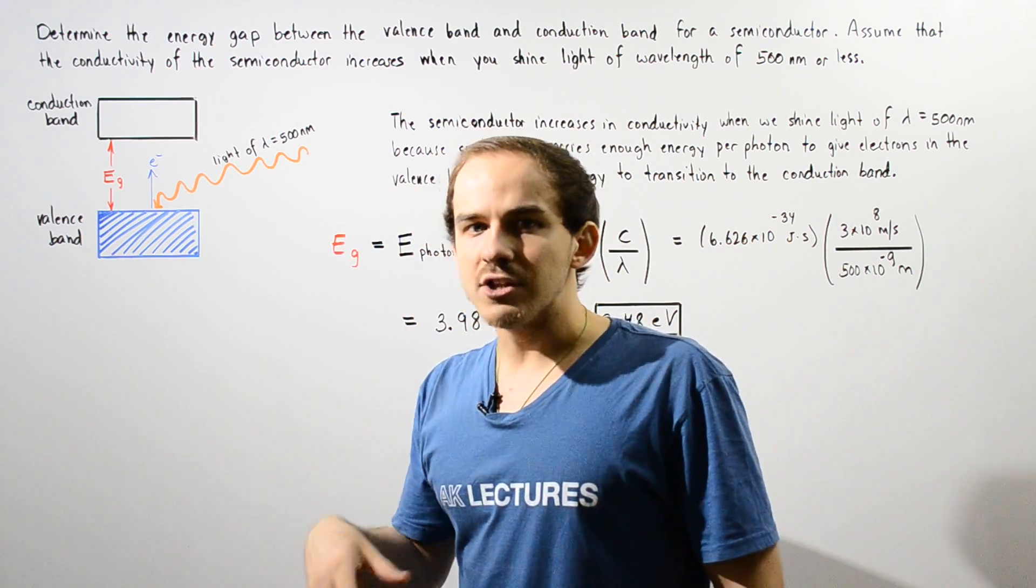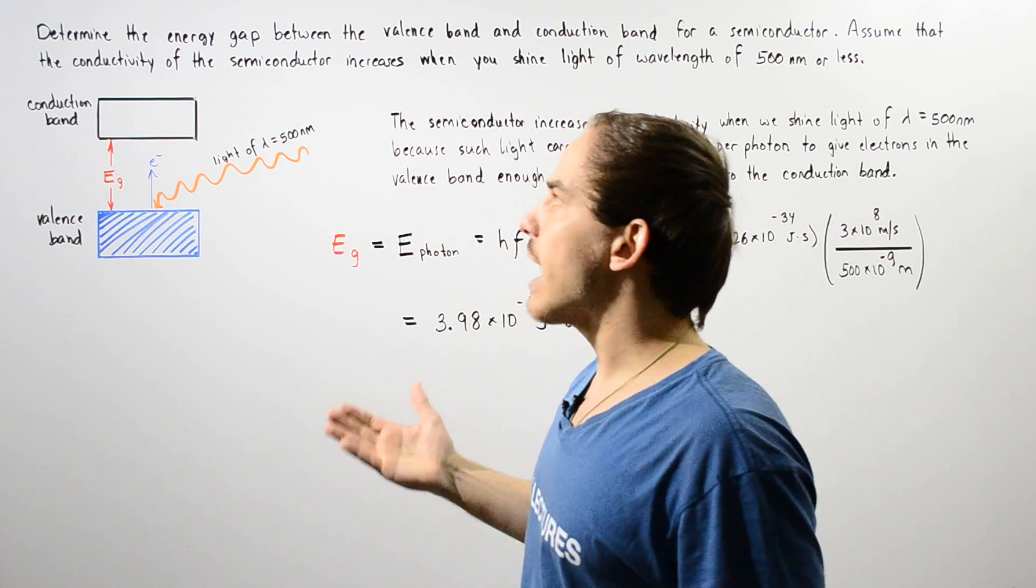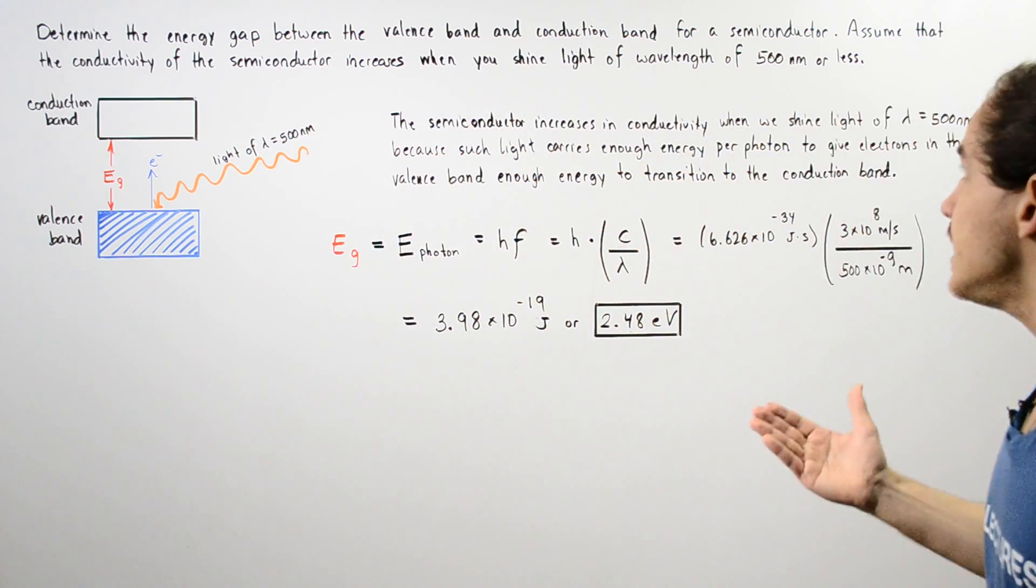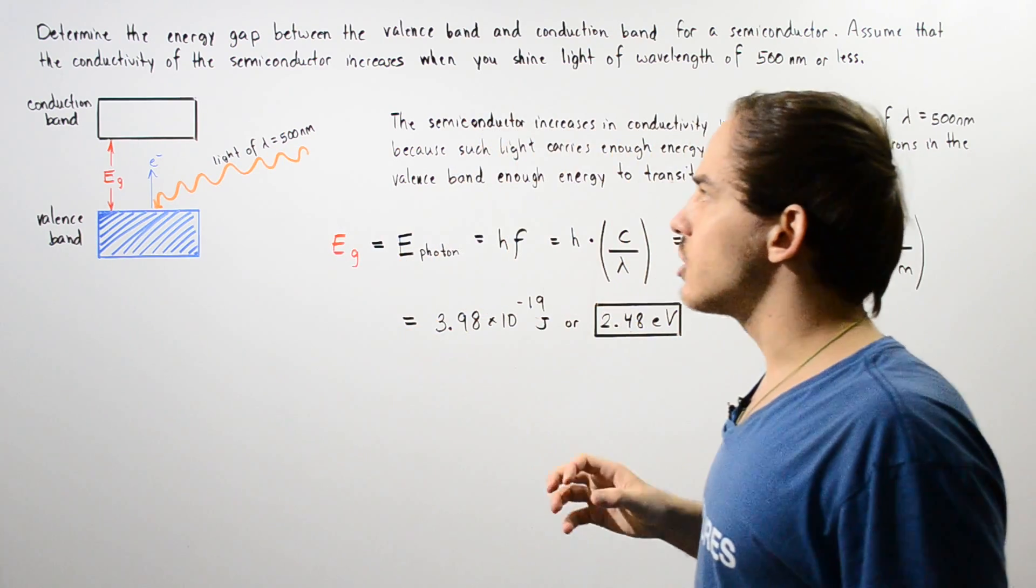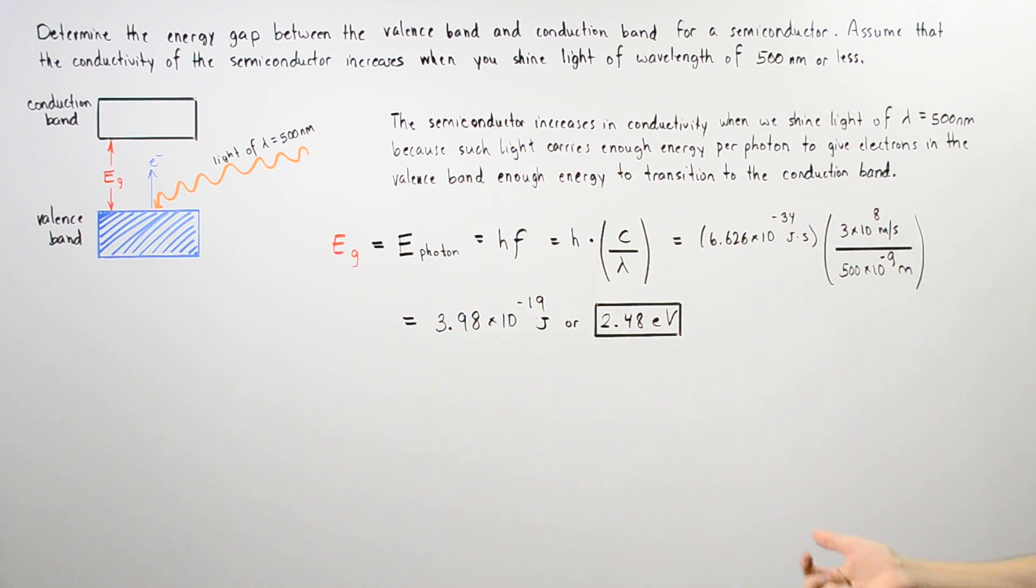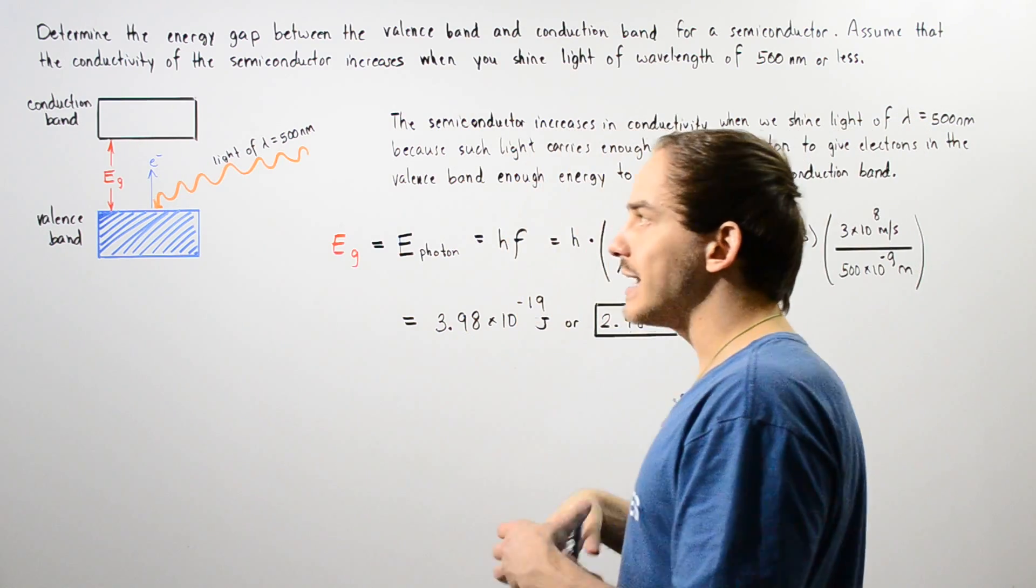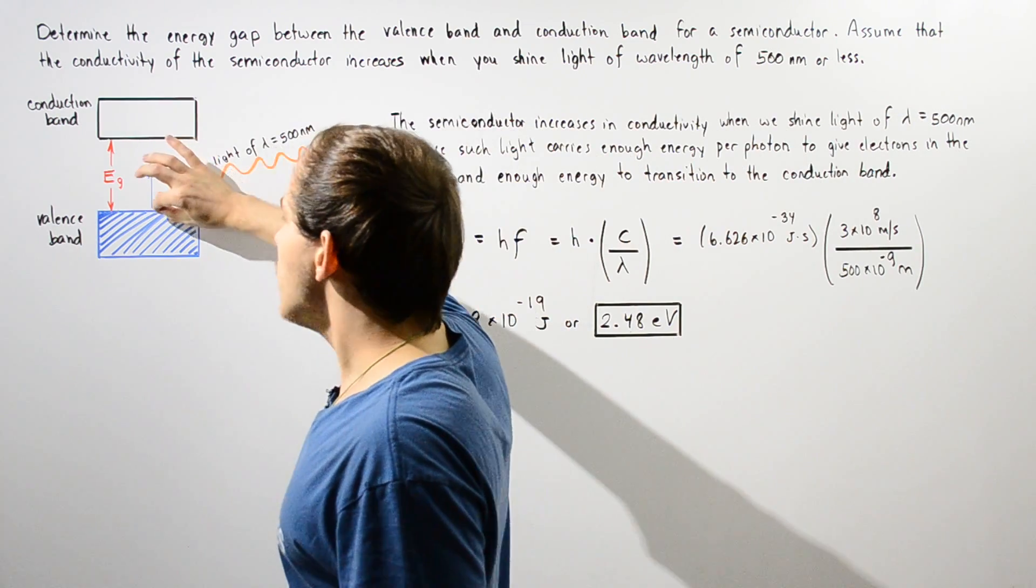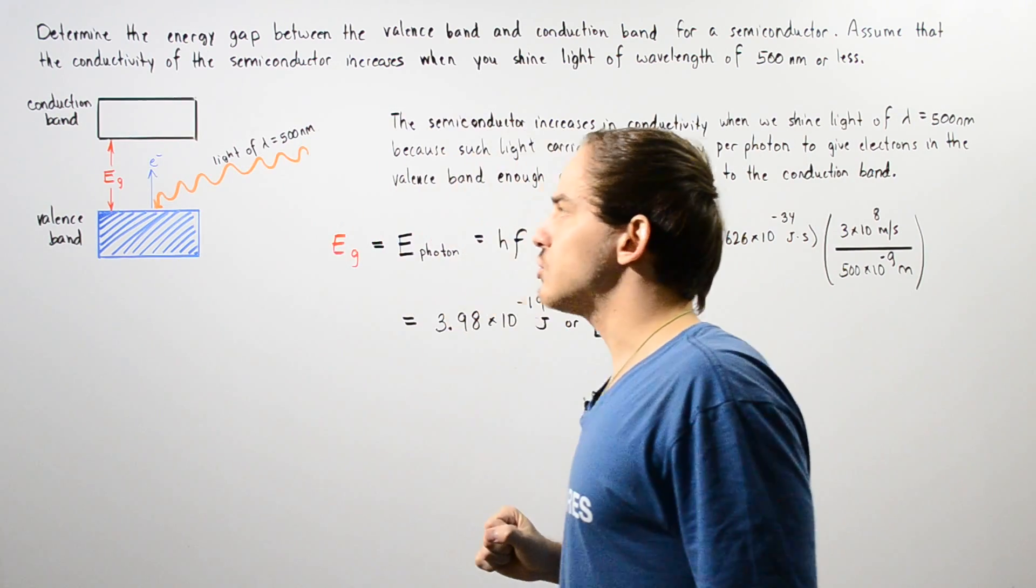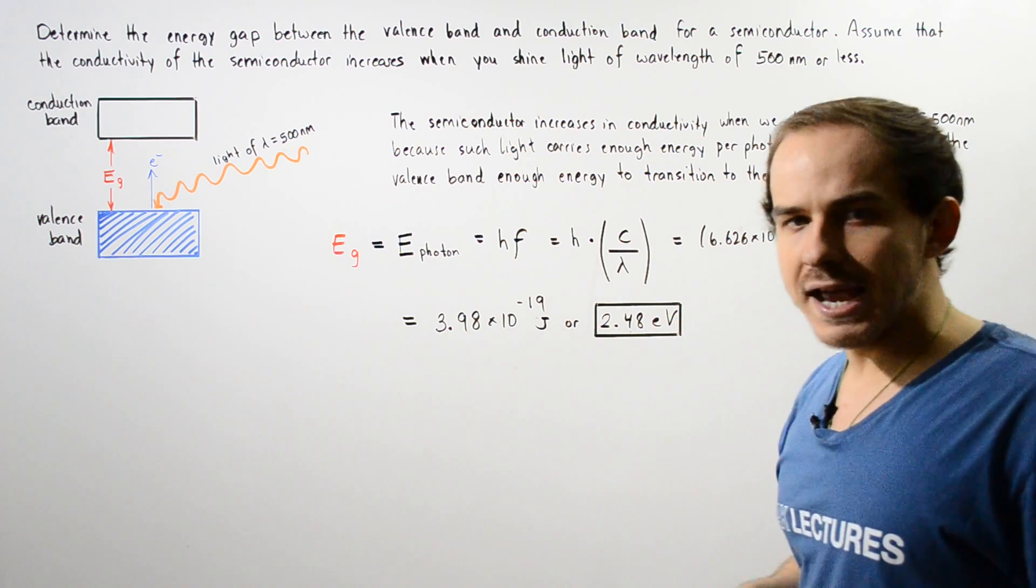And remember, electrons only conduct electricity when they are found in our conduction band. So we see that only when we shine light of a wavelength of 500 nanometers or less does the photons inside the light actually have enough energy to give to the electron for that electron to transition to our conduction band from the valence band.